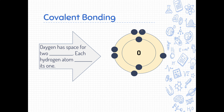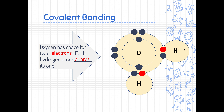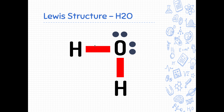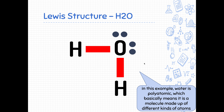Here's another example of a covalent bond. We already know that oxygen has space for two electrons in its outer shell. If we have two hydrogen atoms that come in, they each have one electron to share, and this forms H2O, or water. We have a lone pair and then two bonded pairs. This is how we use a Lewis structure to represent water, with each hydrogen having a single bond to the oxygen. In this example, water is polyatomic — a molecule made up of different kinds of atoms.